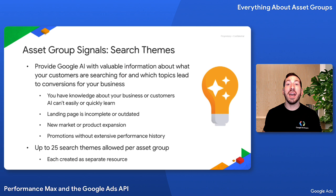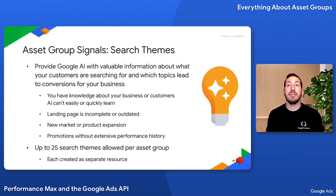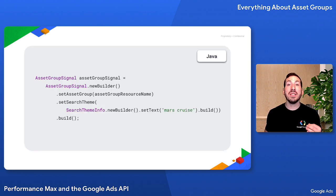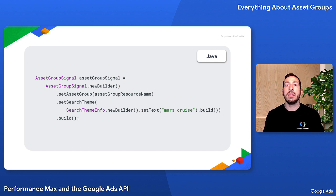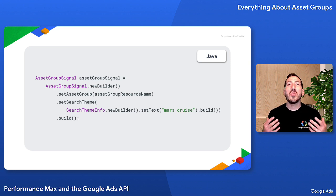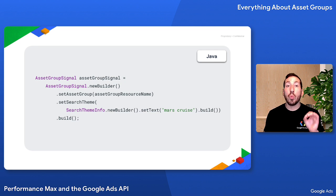Finally, you can use search themes to provide important information to help your campaign ramp up and optimize performance faster. Adding search themes to asset groups follows the same pattern as audiences, except instead of setting the audience field on your asset group object, you populate the search theme field with a search theme info object, which is basically just a wrapper on a text string. You can add up to 25 search themes per asset group, and you would create each one with a separate asset group signal object.